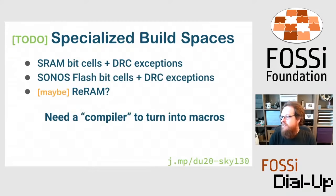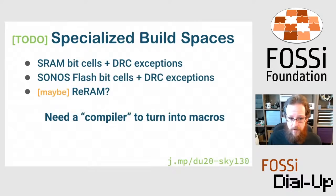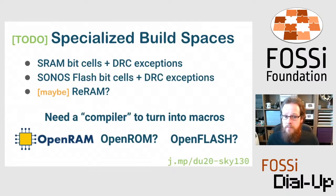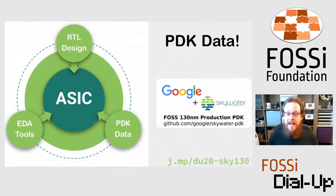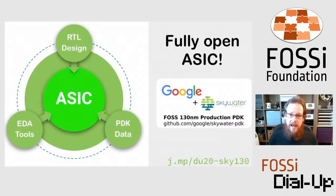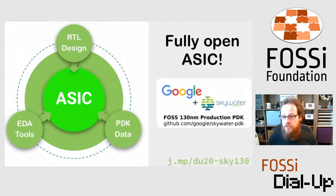The SRAM and flash build spaces need a compiler to turn into macros. They've been working with OpenRAM for SRAM, but also need things like OpenROM and OpenFlash. With an open source PDK, open source RTL, and open source EDA tools, a fully open source ASIC should be achievable — and you should be able to publish that data on GitHub under a fully open source license.